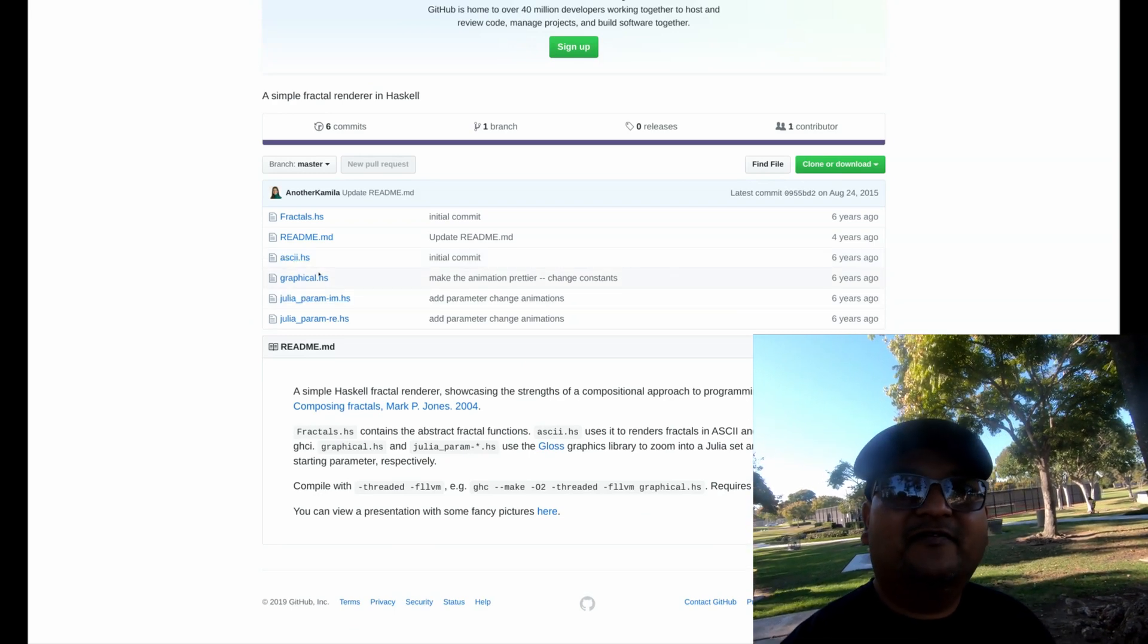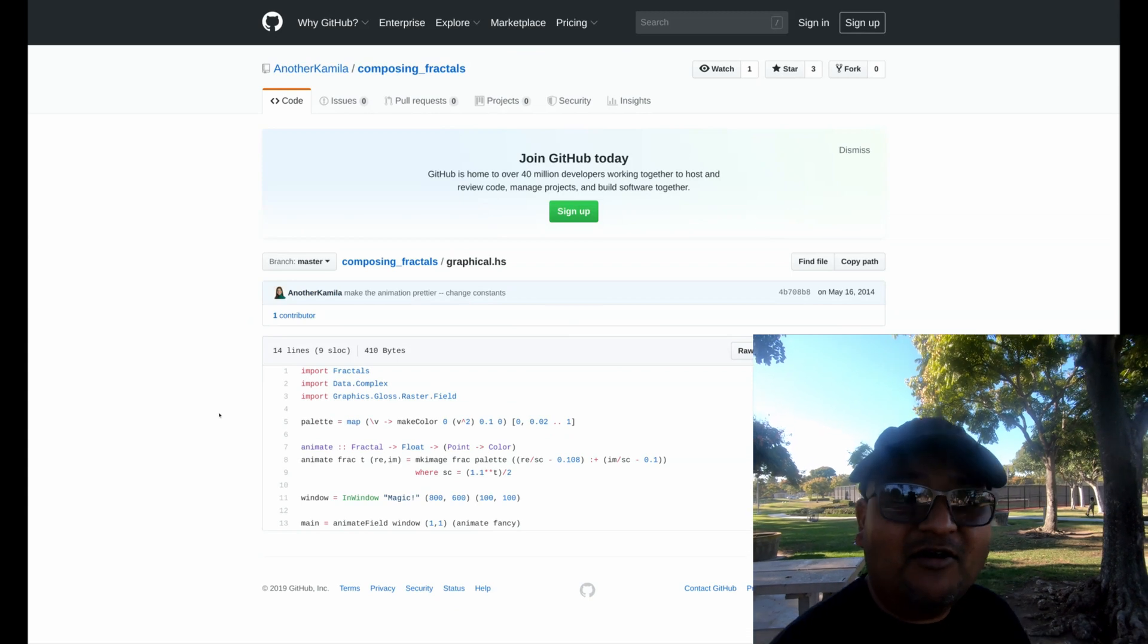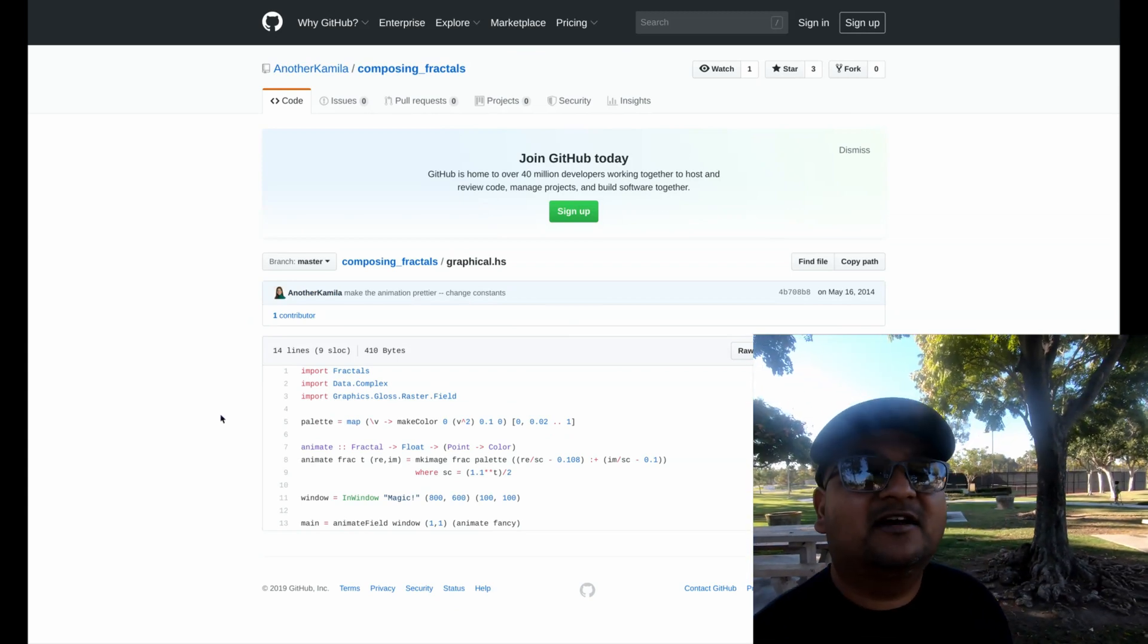In this case, I found a wonderful GitHub repository that takes the code from this very paper and then uses the Haskell gloss library to render it out to the screen.